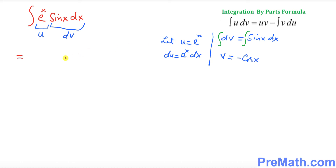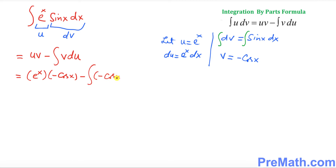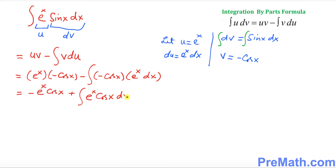Applying the integration by parts formula, this becomes uv minus the integral of v du. So u is e^x, v is negative cosine(x), giving negative e^x·cosine(x) minus the integral of negative cosine(x) times e^x dx. The two negatives become positive, so we get negative e^x·cosine(x) plus the integral of e^x·cosine(x) dx.